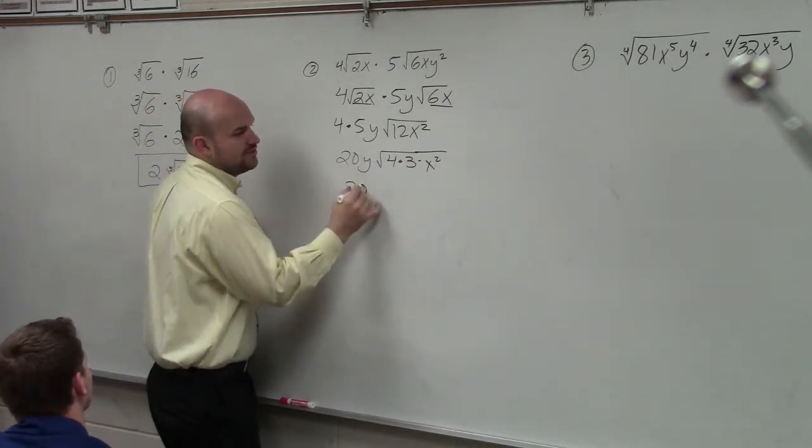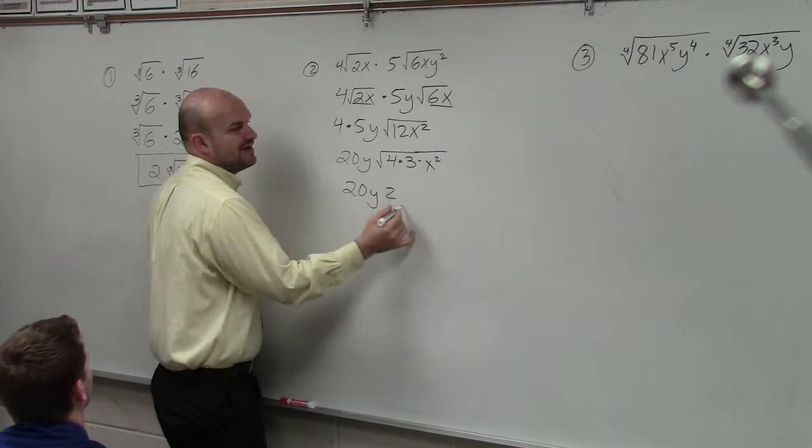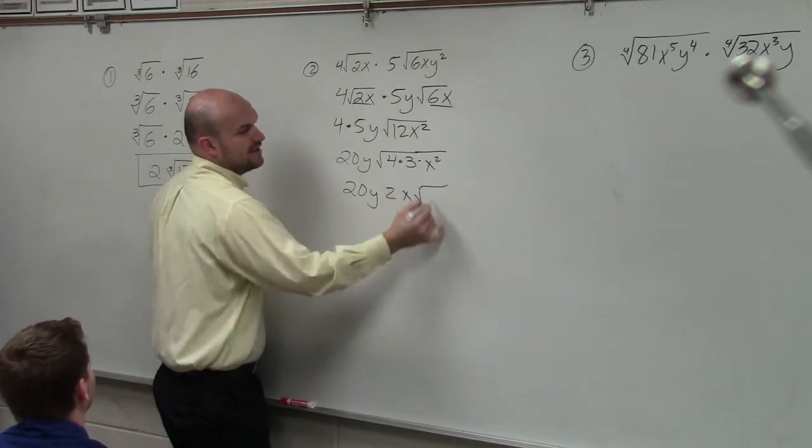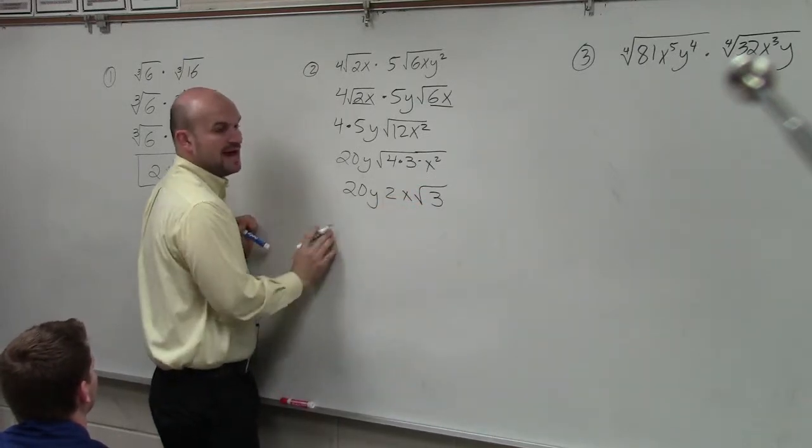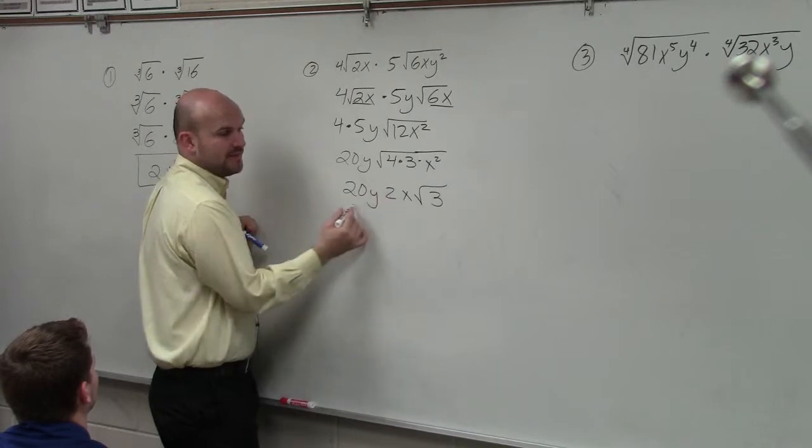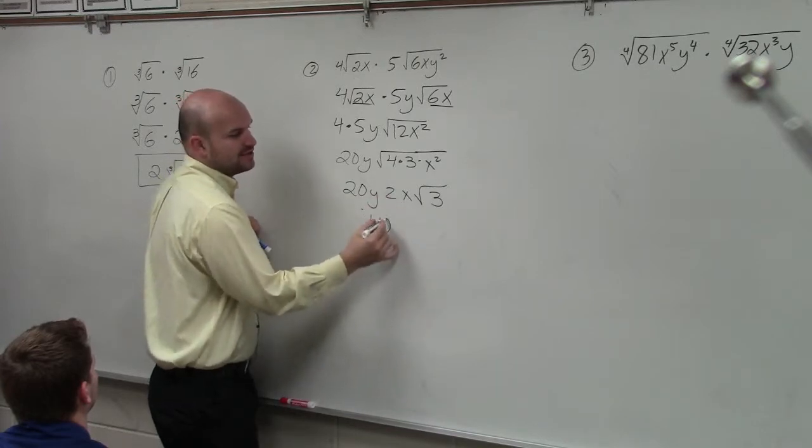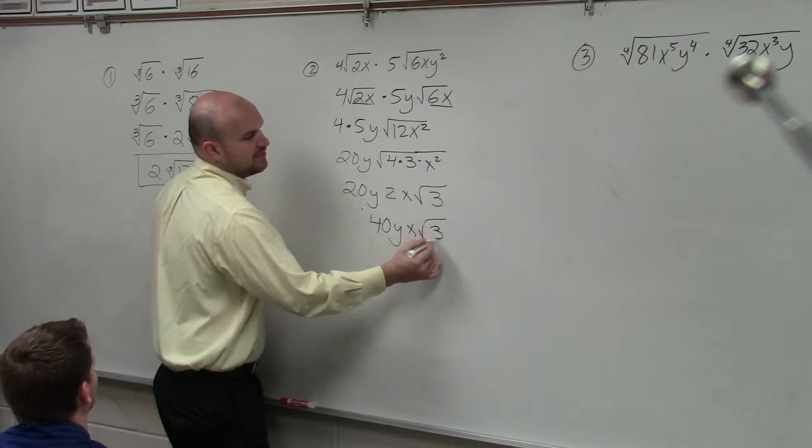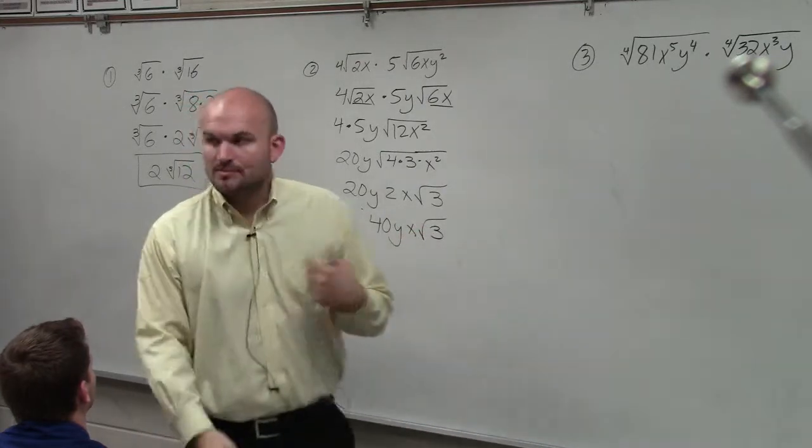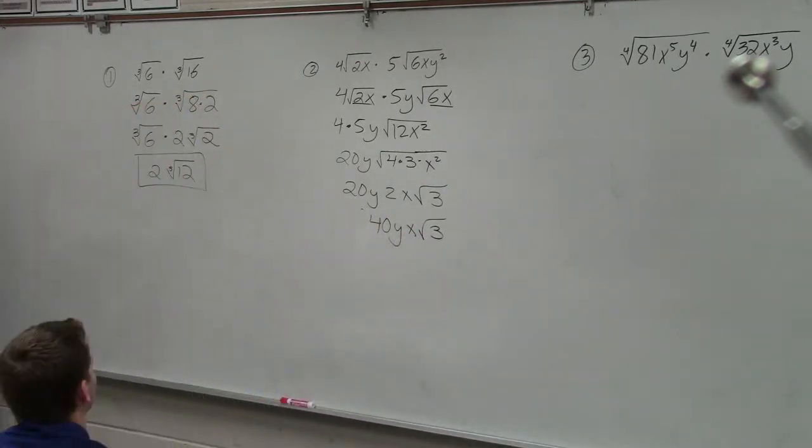So the square root of 4 is going to be 2, the square root of x squared is x, and then you're left with square root of 3. Now again, everything is separated by multiplication, so therefore my final answer is 40yx times the square root of 3. So the basic process is going to be the same: simplify, simplify, simplify.